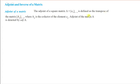The adjoint of the matrix A is denoted by adj(A).